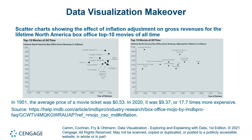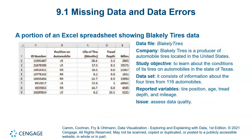Here you can see a data visualization makeover showing the difference in the change of movie price from $0.53 to $9.37. In these two graphs, the one on the left-hand side has a more effective visualization, and it can be easily seen that the price is 17.7 times more expensive.